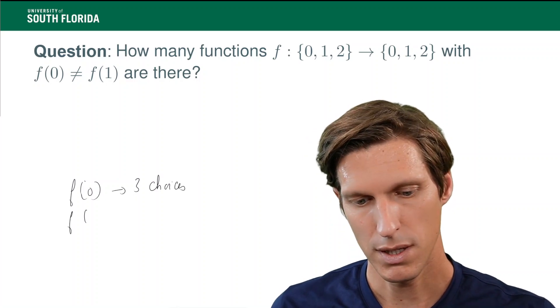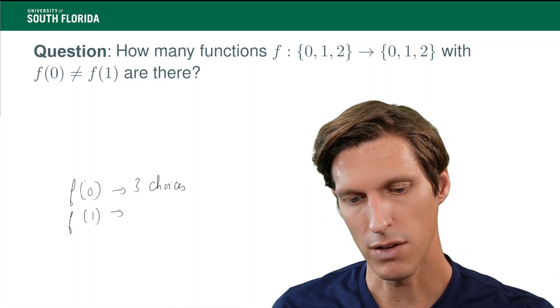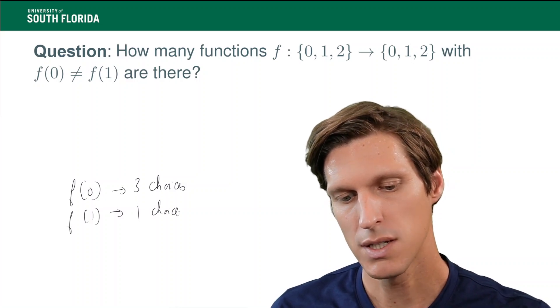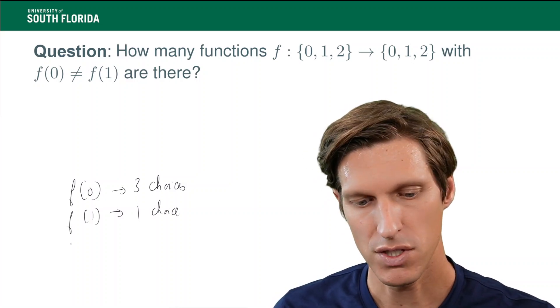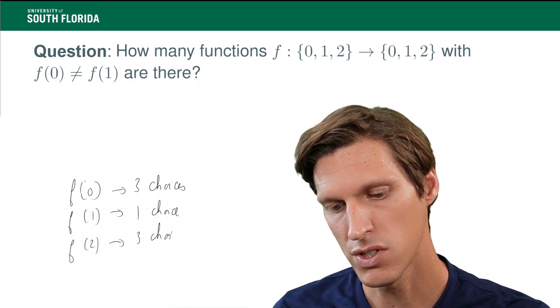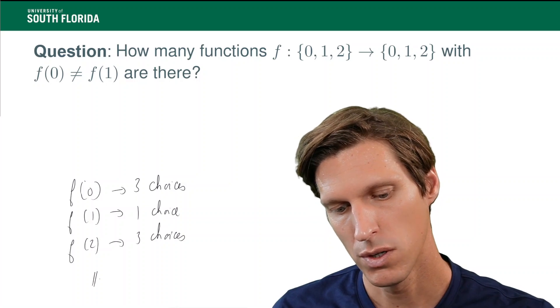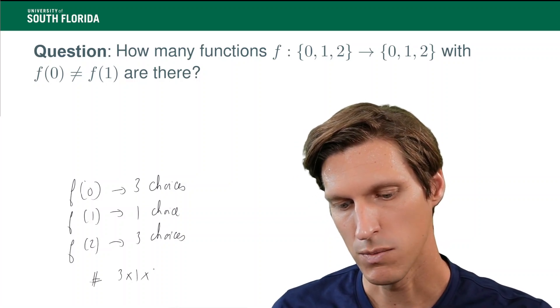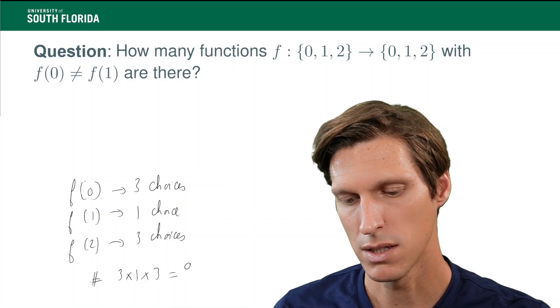But then f of 1, how many choices do I have for f of 1? Well, I only have one choice, right? And it's fixed by f of 0. And then f of 2, I have back to having three choices. And the number of such functions is 3 times 1 times 3, and that's 9.